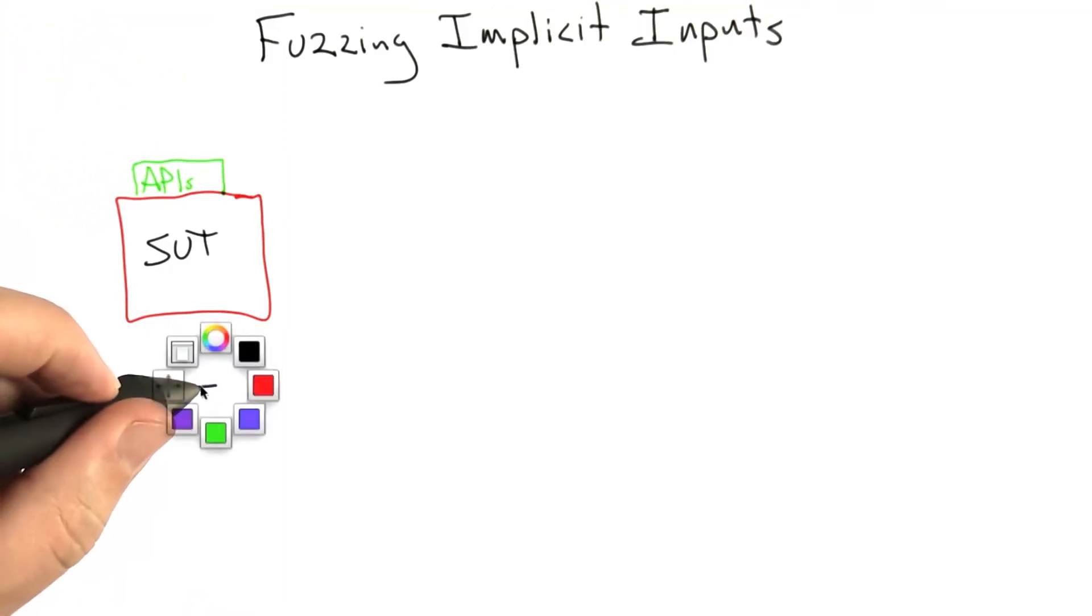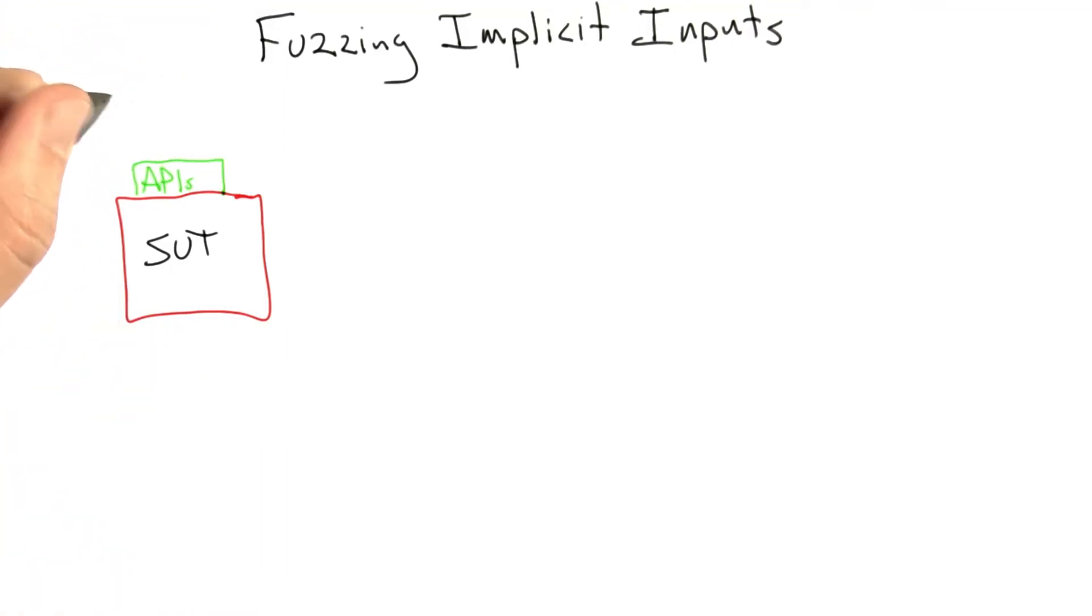Now I'd like to go back to the drawing of a software under test that I feel like I've drawn about 30 times already. Recall that this provides APIs and that most of the time that's what we're fuzzing.